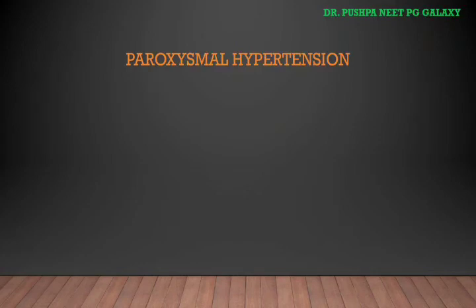Next is paroxysmal hypertension, which means there is episodic elevated blood pressure. Causes can be pheochromocytoma, panic disorder, anxiety, hyperthyroidism, migraine disorders, or seizure disorders.